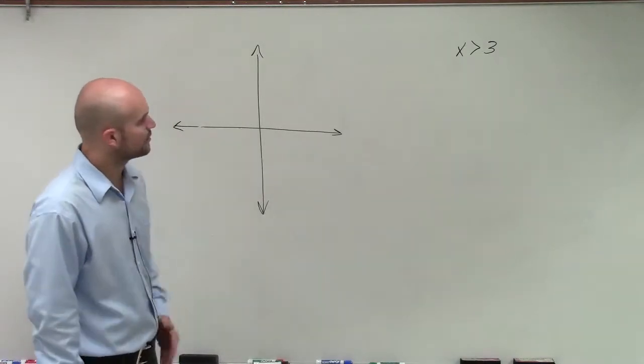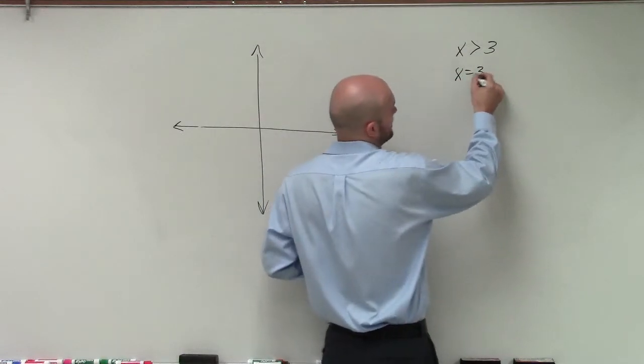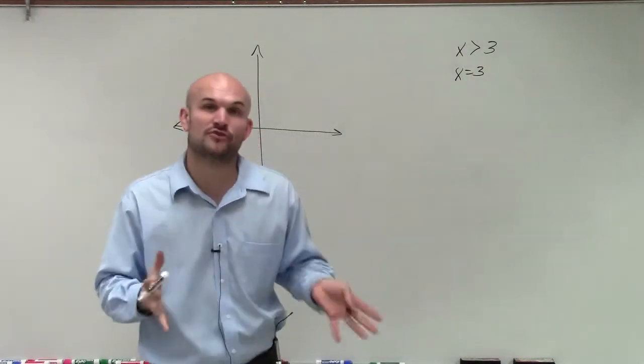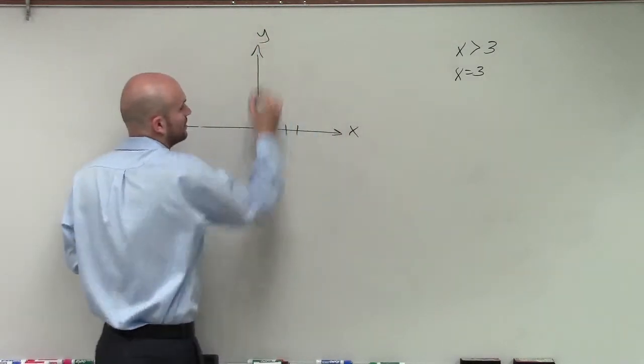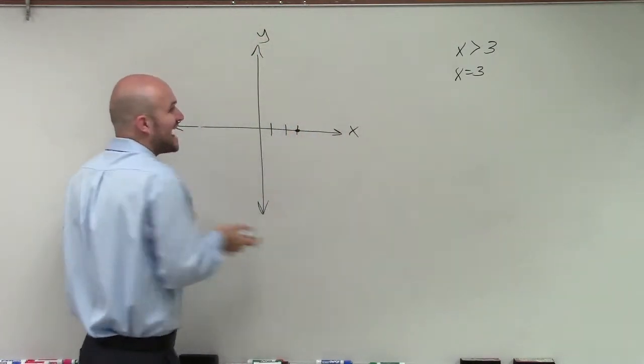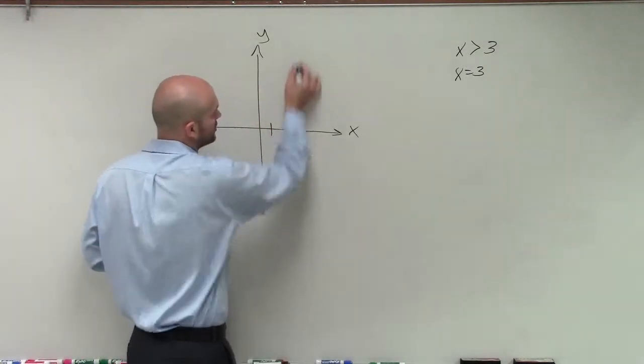So the first thing that we're going to do is we know that x is greater than 3. Or even if I just wanted to graph the line x equals 3, that's going to produce a vertical line at positive 3: 1, 2, 3 on the x-axis. So we say x equals 3, and x is always going to equal 3 if I create a table of values. So we're going to have a vertical line going this way.